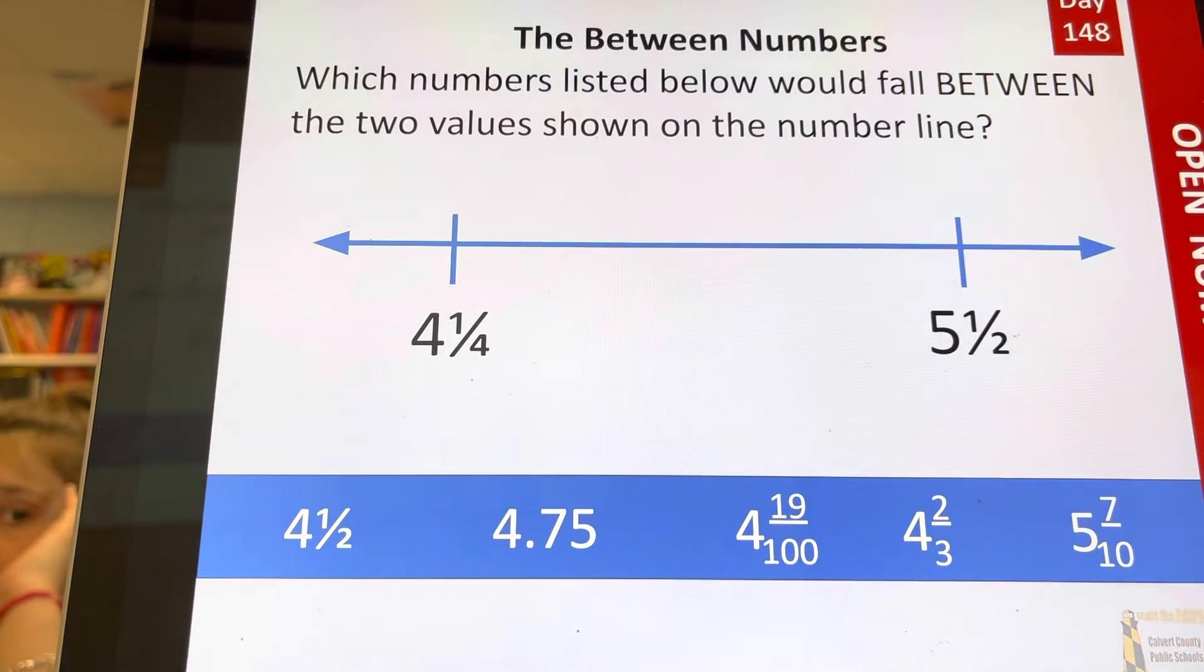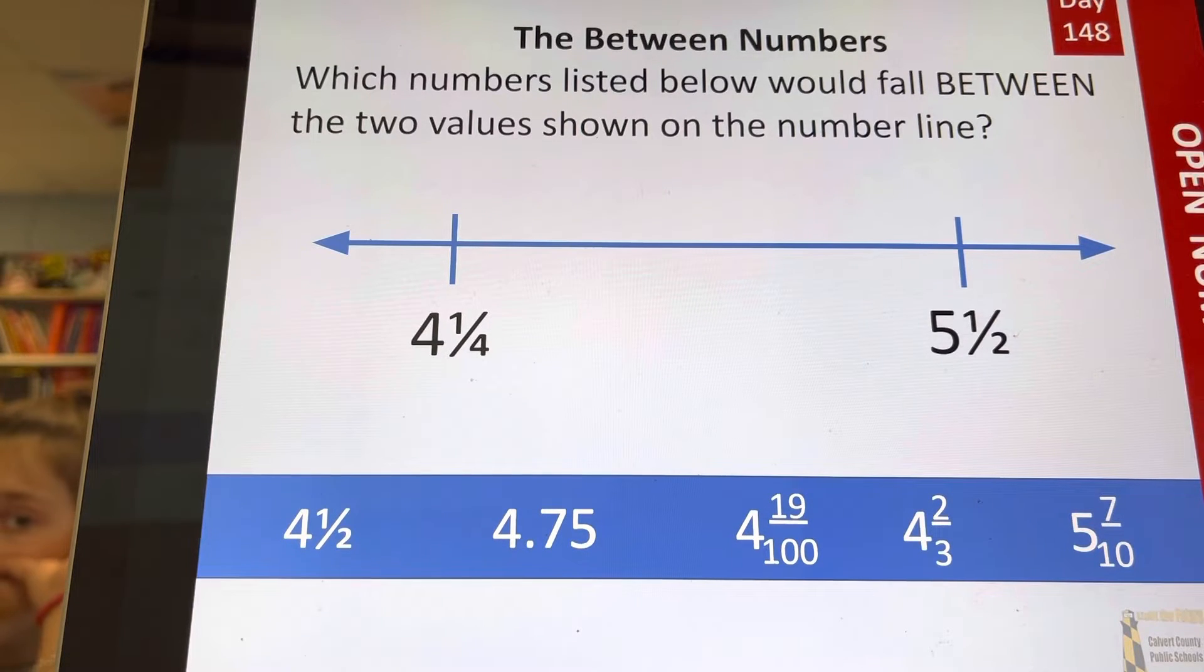All right, we've got two numbers on our number line: we have four and one-fourth, we have five and one-half. I'm going to go through and I'm going to call on people and they're going to tell me a number that would appear between four and one-fourth and five and one-half.